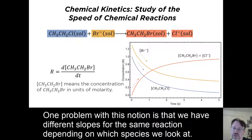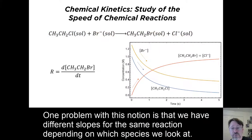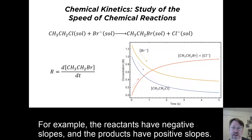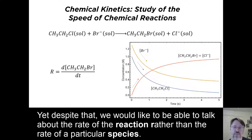One problem with this notion is that we have different slopes for the same reaction depending on which species we look at. For example, the reactants have negative slopes, and the products have positive slopes. Yet despite that, we would like to be able to talk about the rate of the reaction rather than the rate of a particular species.